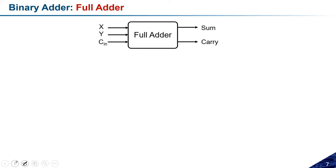The full adder circuit has inputs X, Y, and Cin, which is the carry input from the previous stage. An important point is that a full adder can be utilized as a half adder by setting Cin equal to zero — effectively ignoring that input. So the full adder can be converted into a half adder just by putting one of the inputs to zero. However, a single half adder cannot be used alone as a full adder.